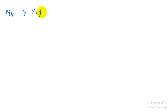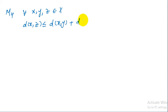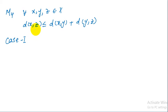Now we test the last condition, M4, which is the triangle inequality. We prove that for all x, y, z belonging to x, d(x,z) is less than or equal to d(x,y) plus d(y,z). We consider two cases. There are only two possibilities: d(x,z) = 0 or d(x,z) = 1. In Case 1, we take d(x,z) = 0.